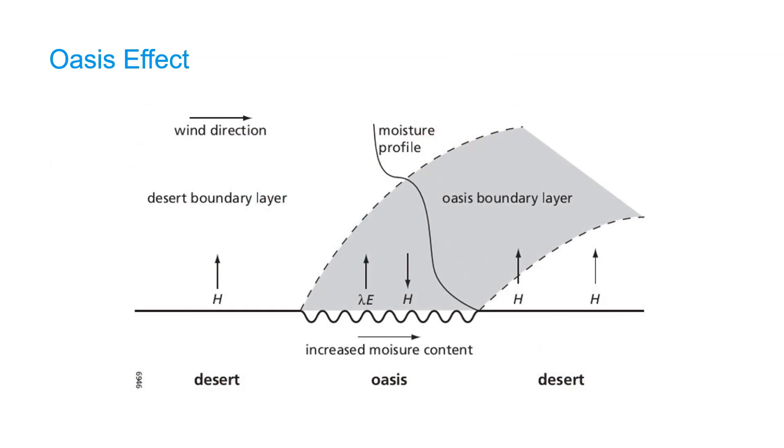Under some circumstances, the sensible heat flux can become negative and supply extra energy for latent energy. This happens when we have a sharp boundary between a dry area and a wet area. Because this typically happens in an oasis in the desert, we call this the oasis effect. But this is not limited to deserts. It can also happen when we have natural water bodies in arid surroundings, melting snow patches, irrigated fields in arid areas, or irrigated urban lawns and parks.